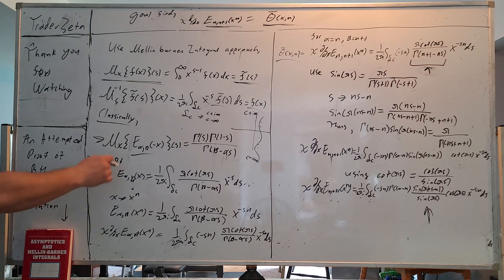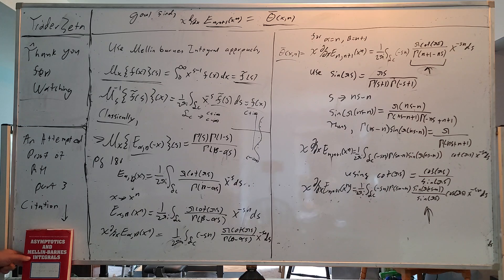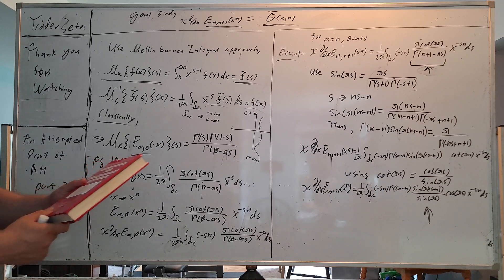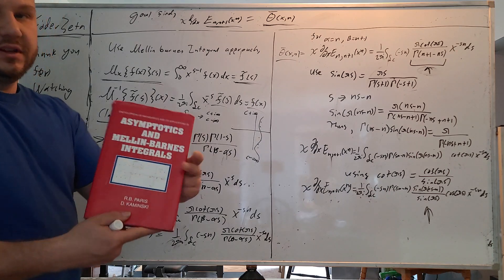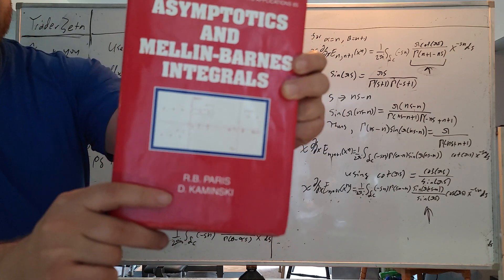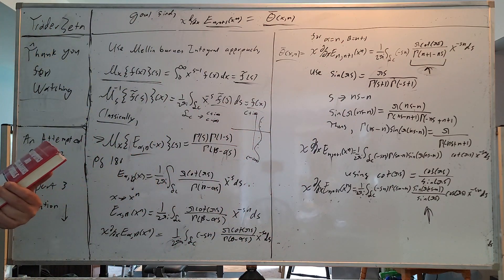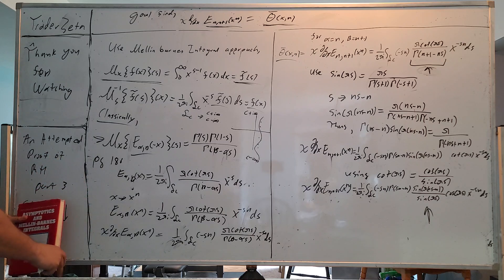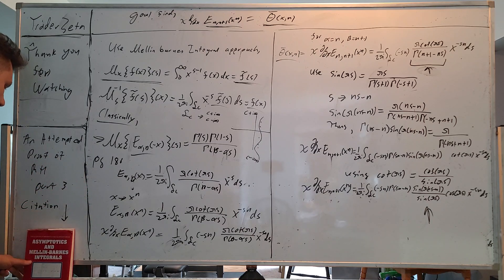We are going to keep this in mind, but what we're going to do is use this book right here: Asymptotics and Mellin and Barnes Integral by R.B. Paris and D. Kaminsky, Encyclopedia of Mathematics and Applications, 85. This is a wonderful book.